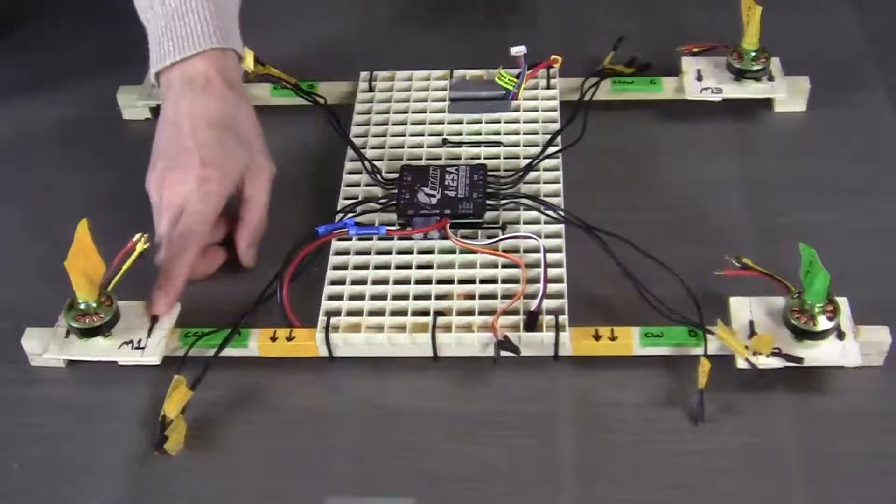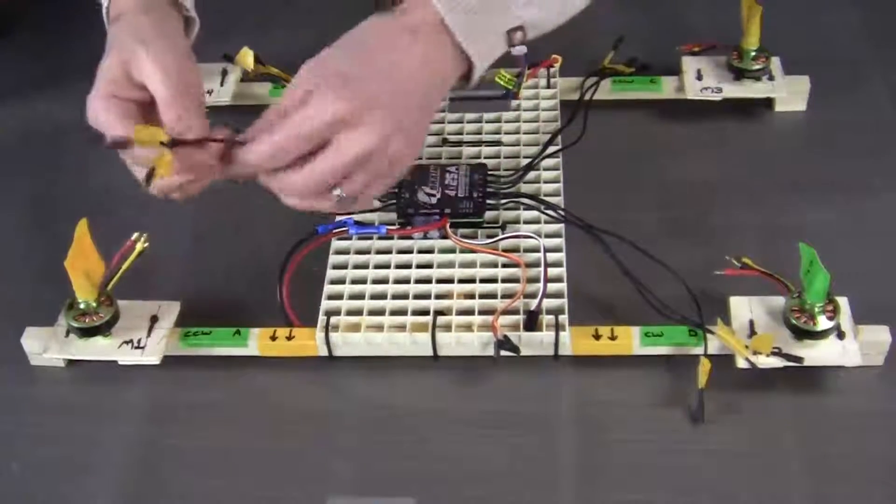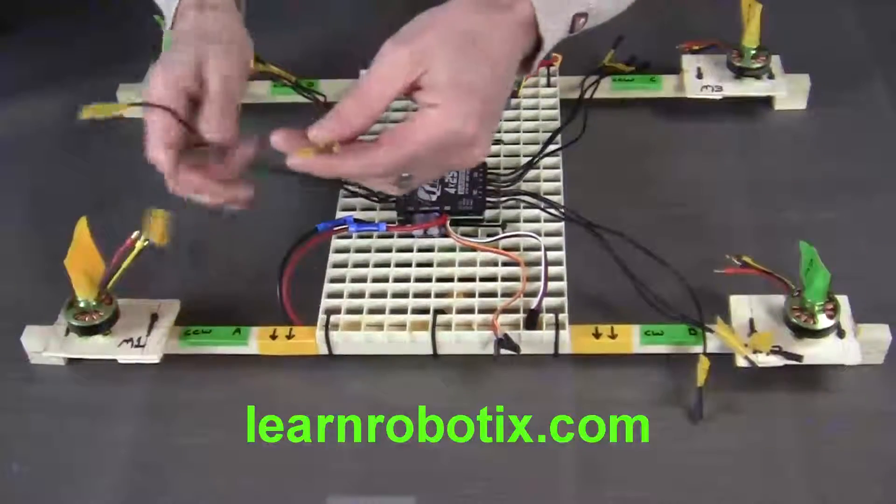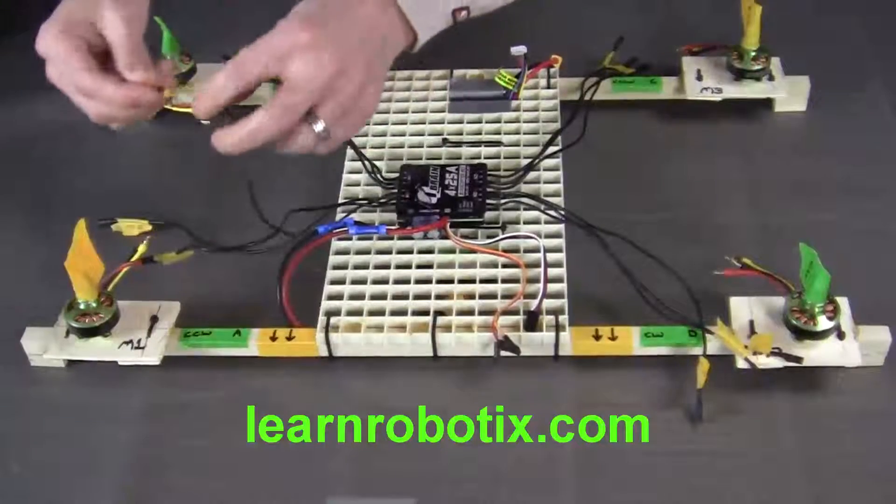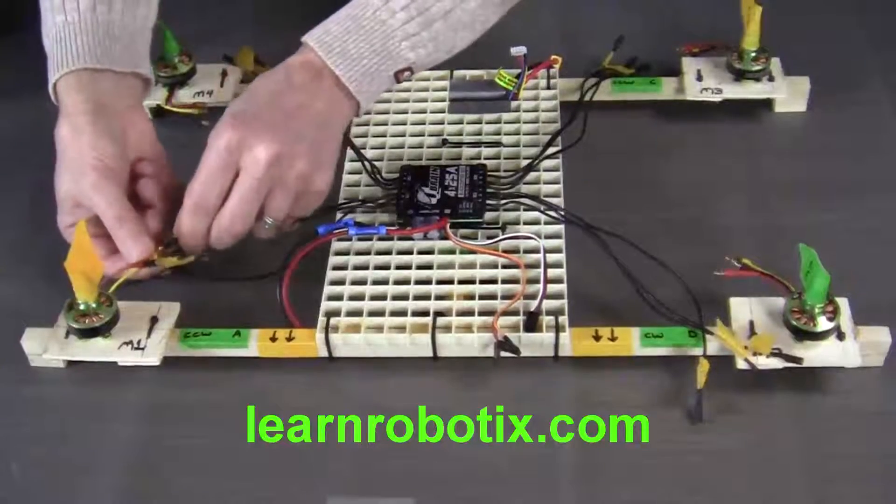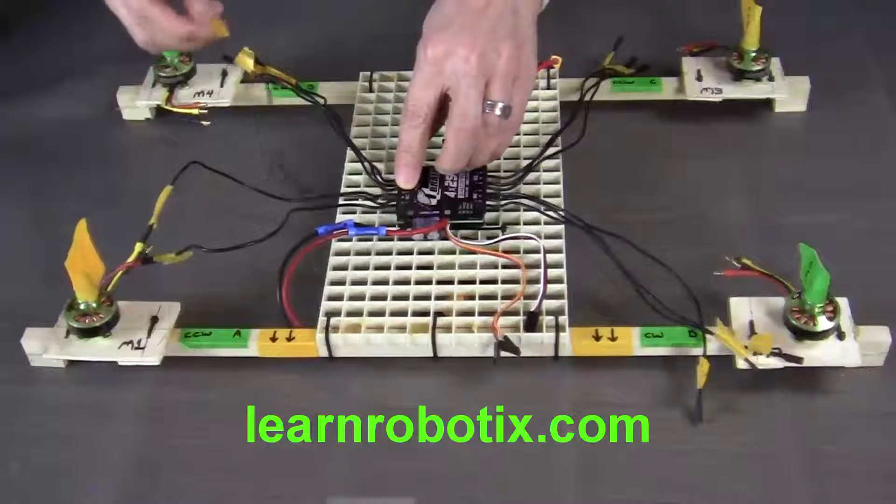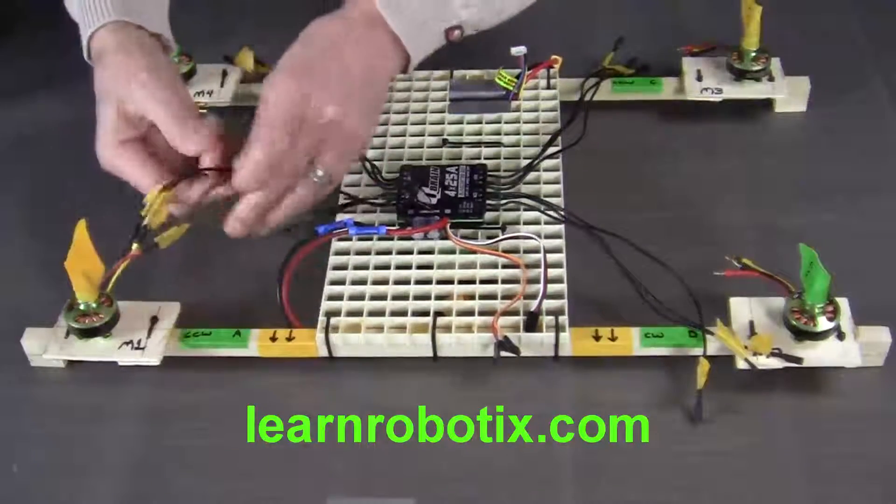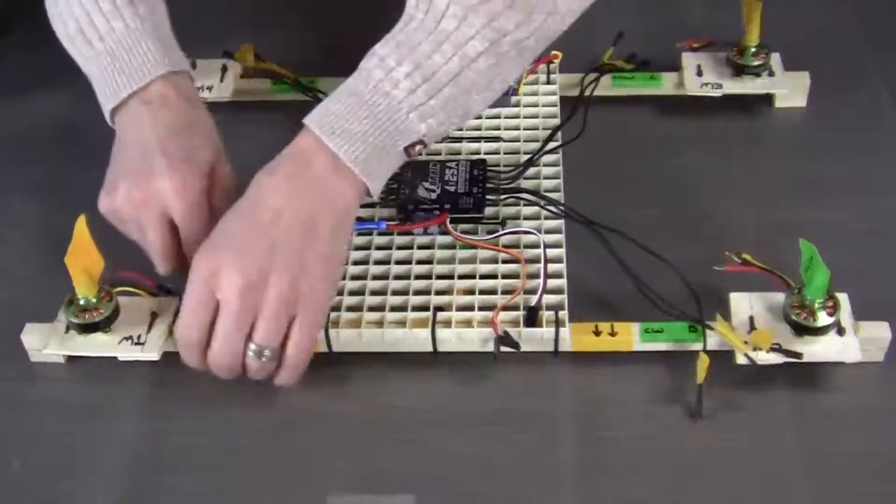Now the M1 motor we want to turn in a counter clockwise rotation. So we're going to connect the A wire, let me just get the A wire going here. The A wire to the red wire of our M1 motor. We're going to connect our B wire to the yellow wire of our M1 motor and we're going to connect the M1C on the QBrain to the black wire on our M1 motor.